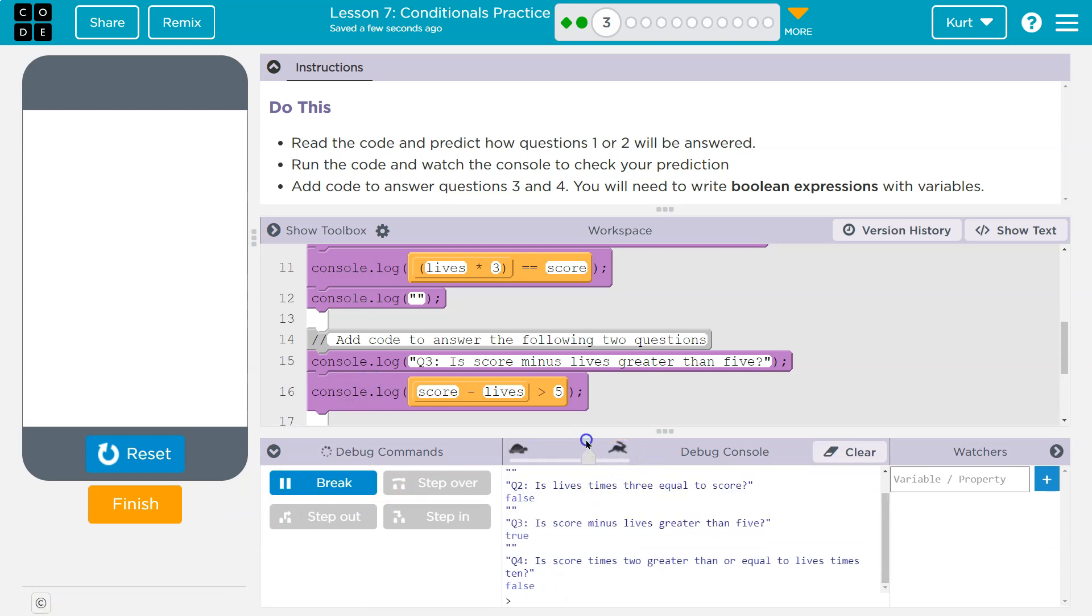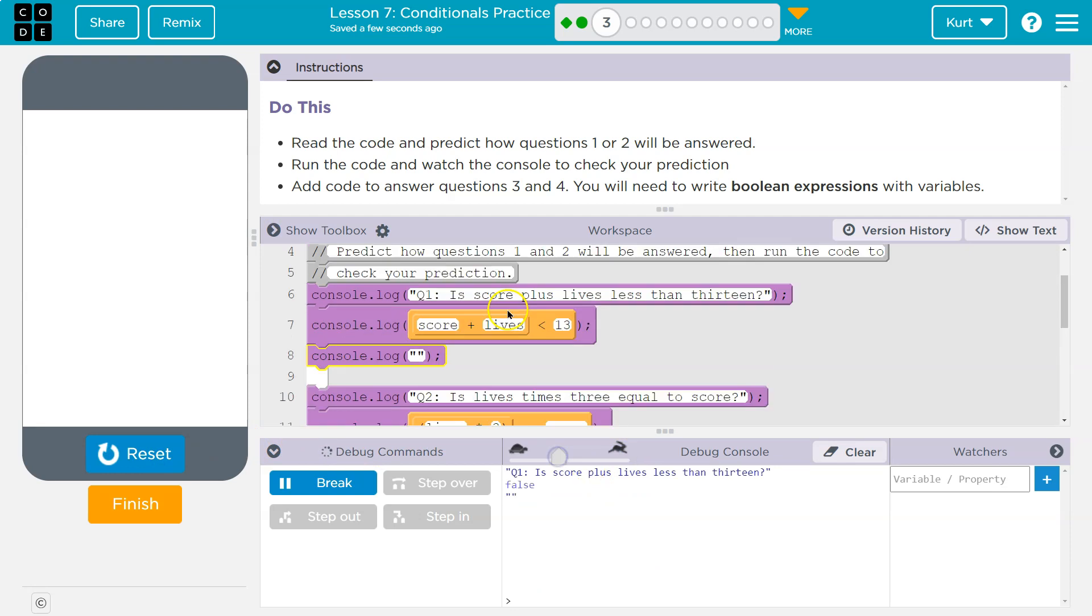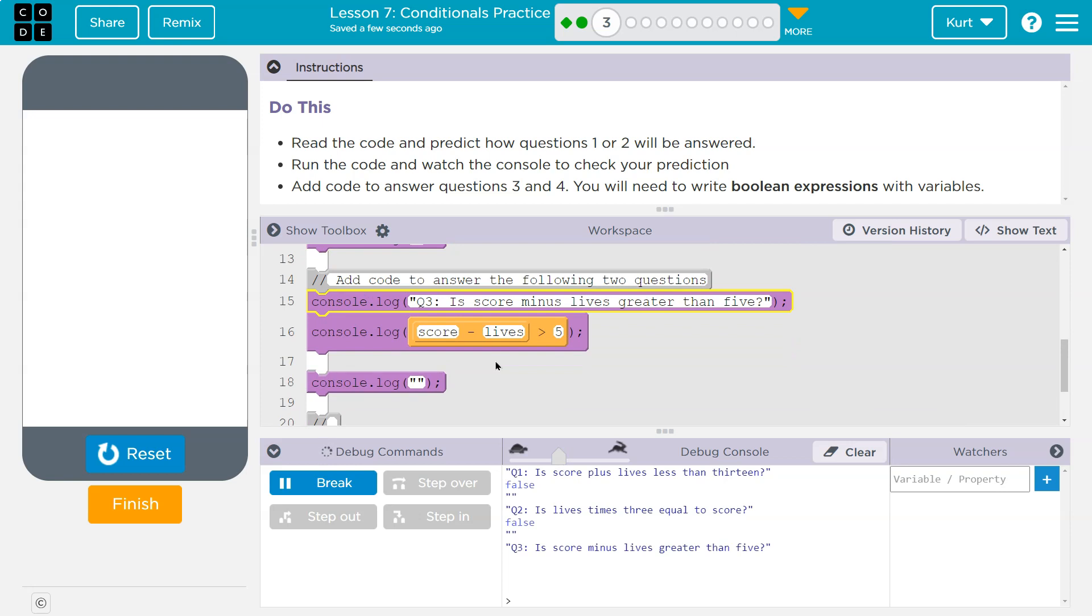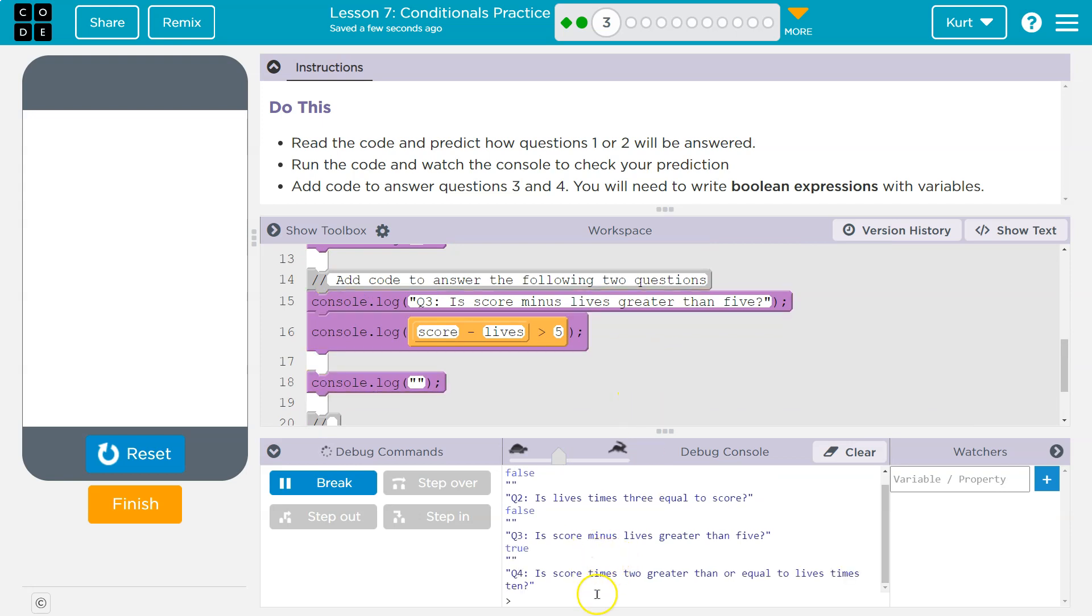Oh, that was super fast. Oh, I had it on fast. Now remember, you can watch it go through the code. If we slow this down, you can see it run through everything. And that can really help with bug finding and with understanding because this stuff's getting tricky. Let's see if we got these right. Is score minus lives greater than 5? True and false. Hey, we did it. Awesome.